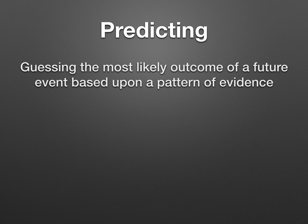The next word is predicting. It's not a new word, but it's a science skill you have to master. It's guessing the most likely outcome of a future event based on a pattern of evidence — meaning it's not just a random guess. So if I'm asking you to predict the weather and you're in July and you predict it's going to snow, that's not using a pattern of evidence. In the south you'd predict it's going to be hot with a possible chance of a thunderstorm or rain — that's a pattern of evidence.